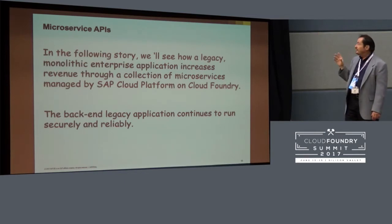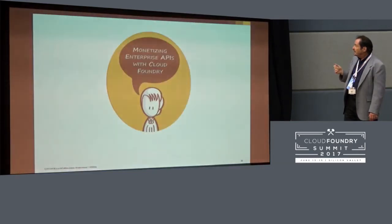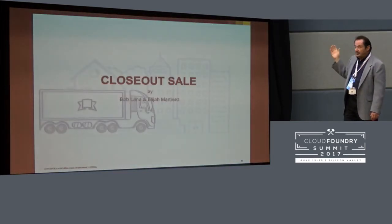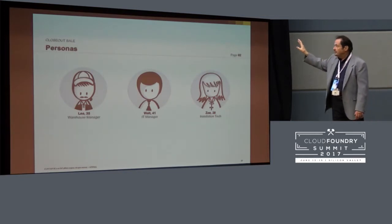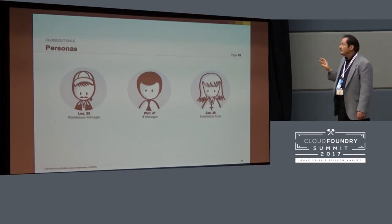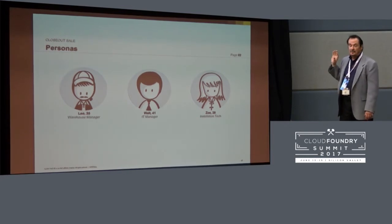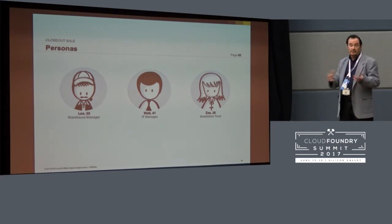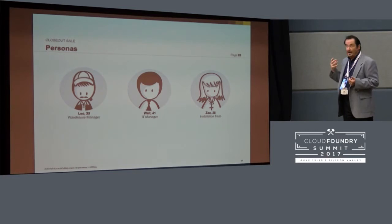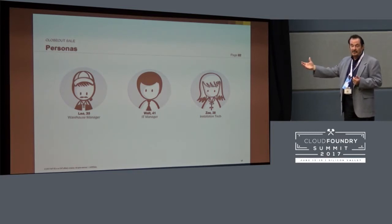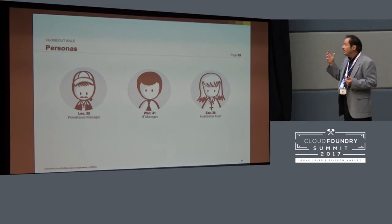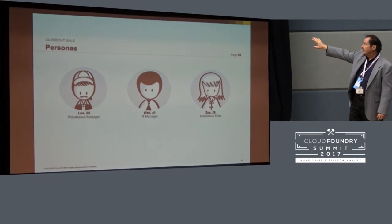We're going to see a story about how this happens in one organization. It's about a close-out sale. These cartoons are actually a product called Scenes that SAP uses for user-centered design. It allows us to look at scenarios based on the individuals who are going to be using the software and ask ourselves how they cope today, how they cope with our software, and we can focus on optimizing functionality. So here we've got a warehouse manager Leo, an IT manager Walt, and an installation tech Zoe.